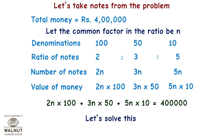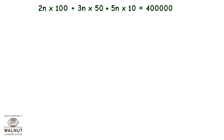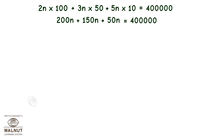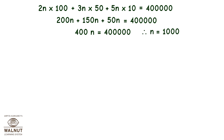Let's solve this. We get 200n plus 150n plus 50n equals 4 lakh. Therefore 400n equals 4 lakh, and therefore n equals 1000.